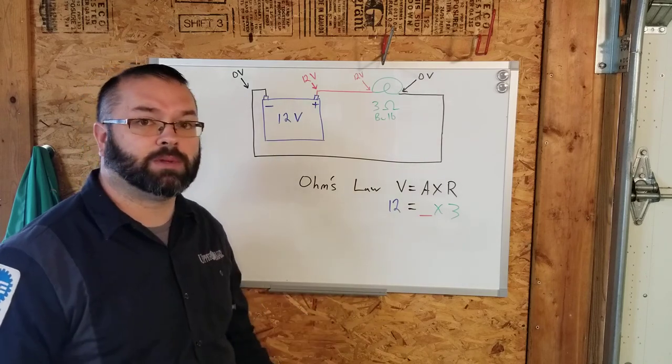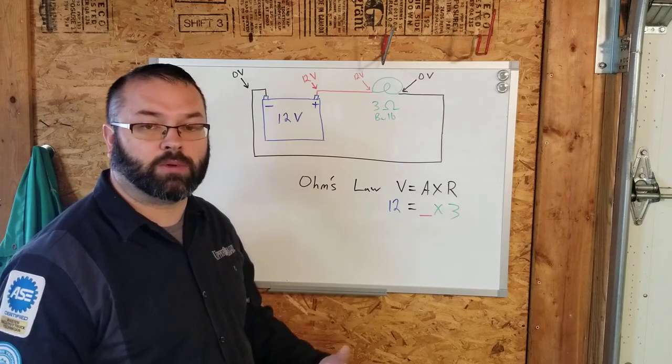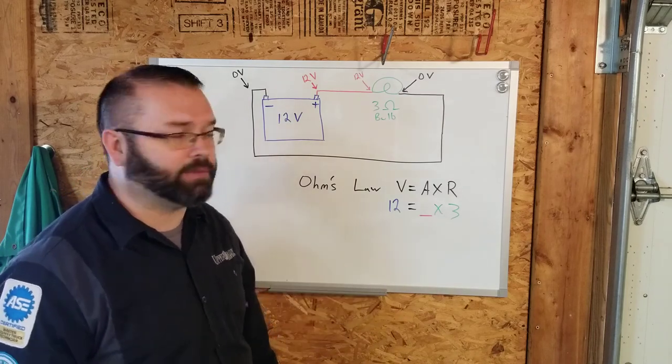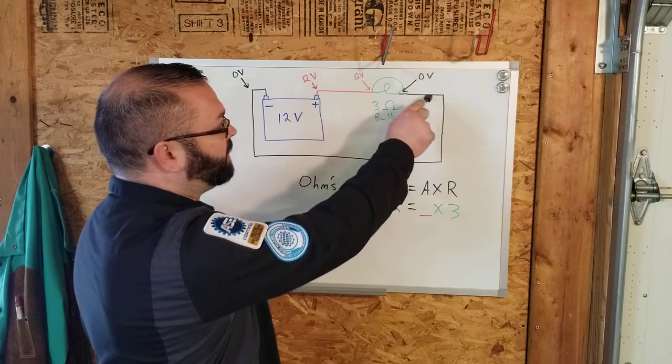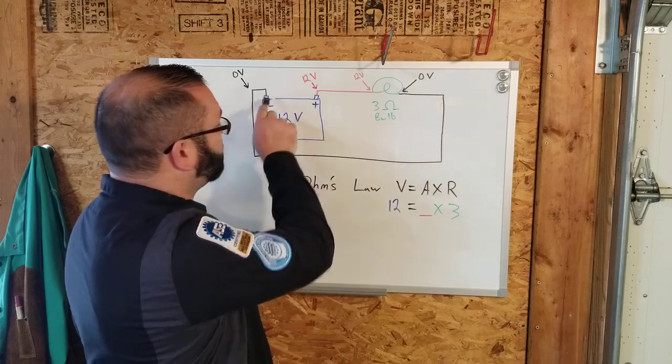In a correctly functioning system, our load, when it's all done, there should be no volts left. So we have zero volts. We'll have close to zero volts returning our ground side to negative.